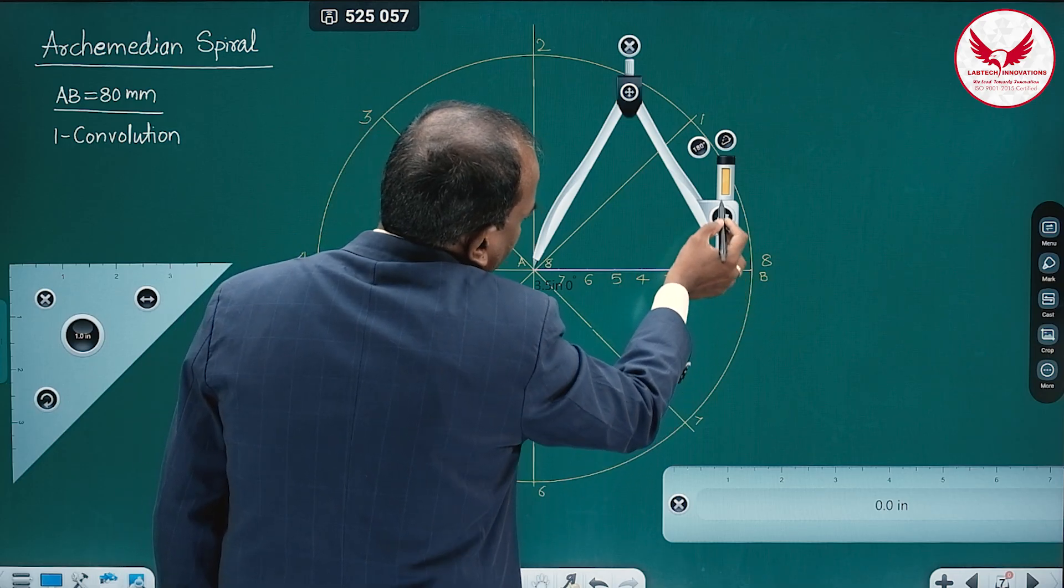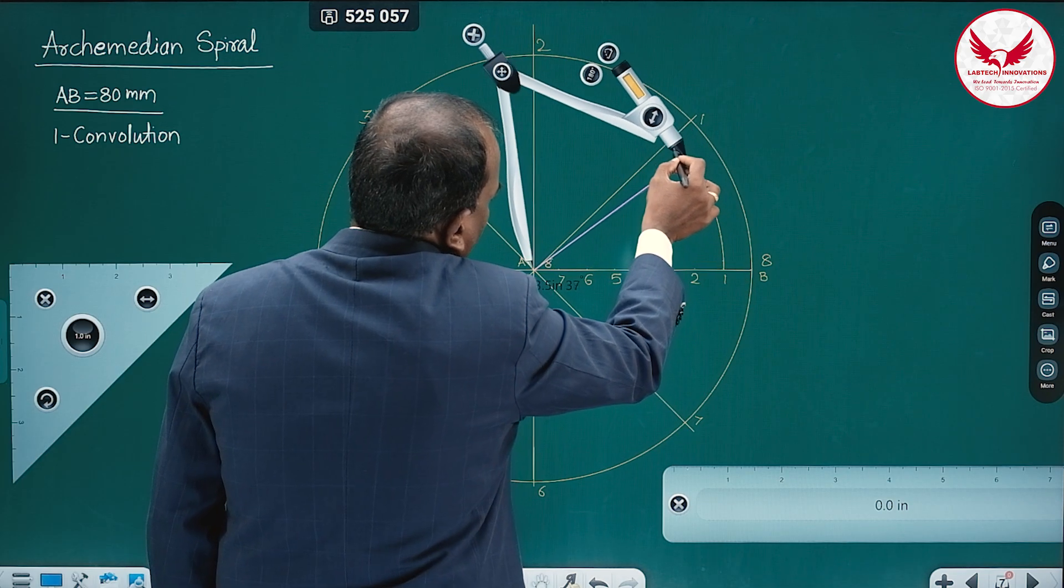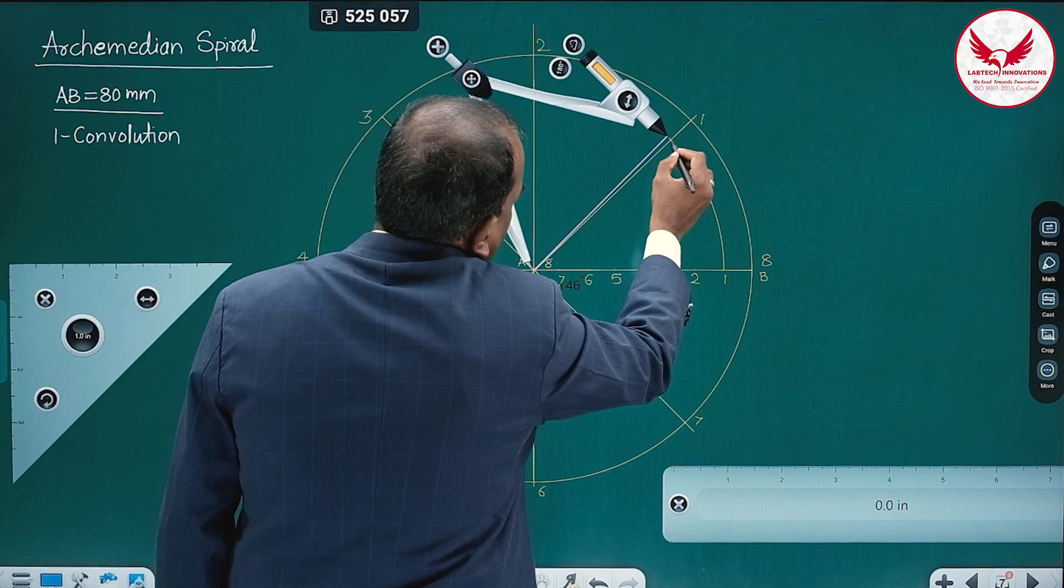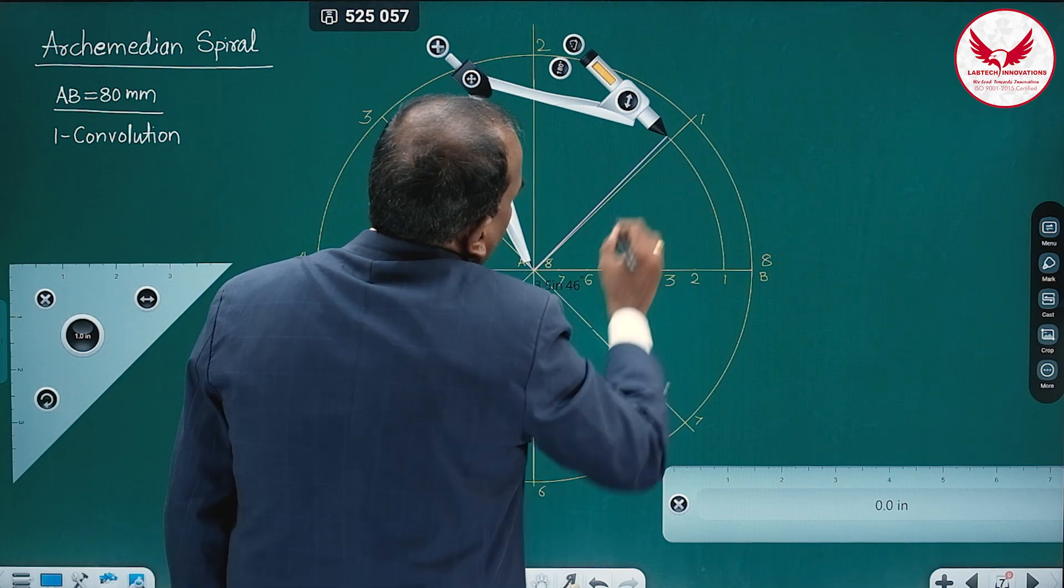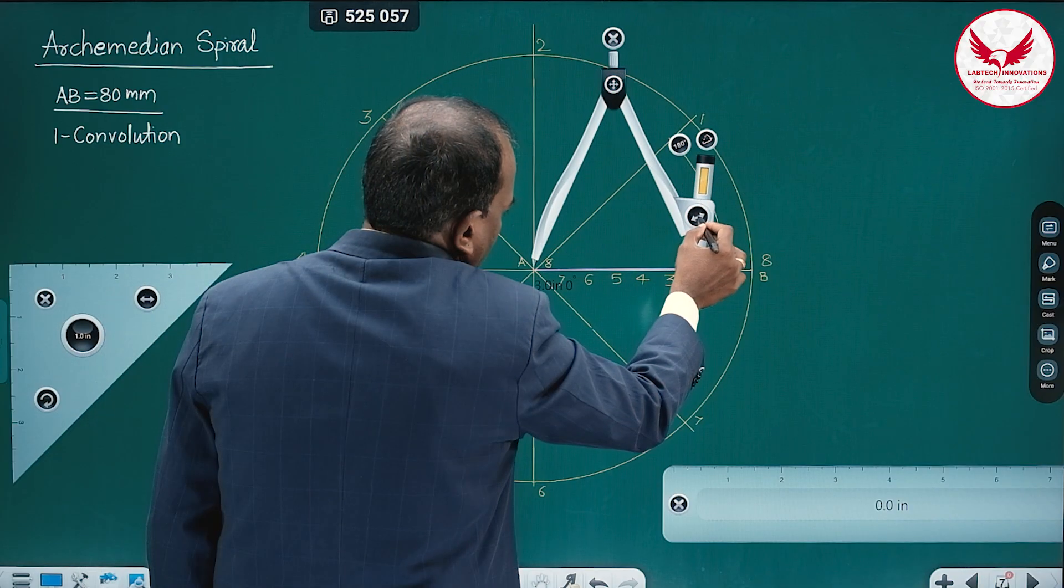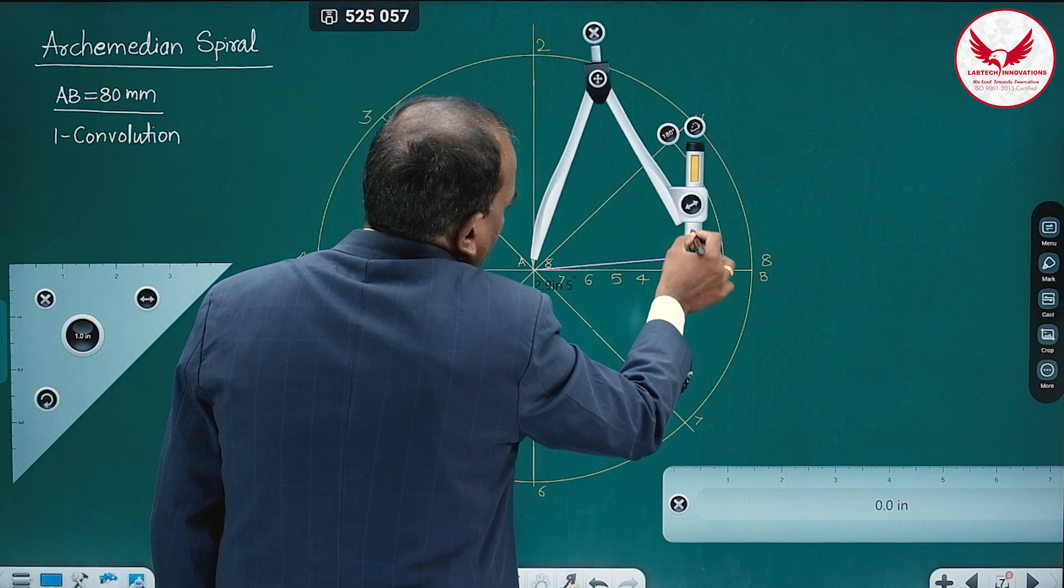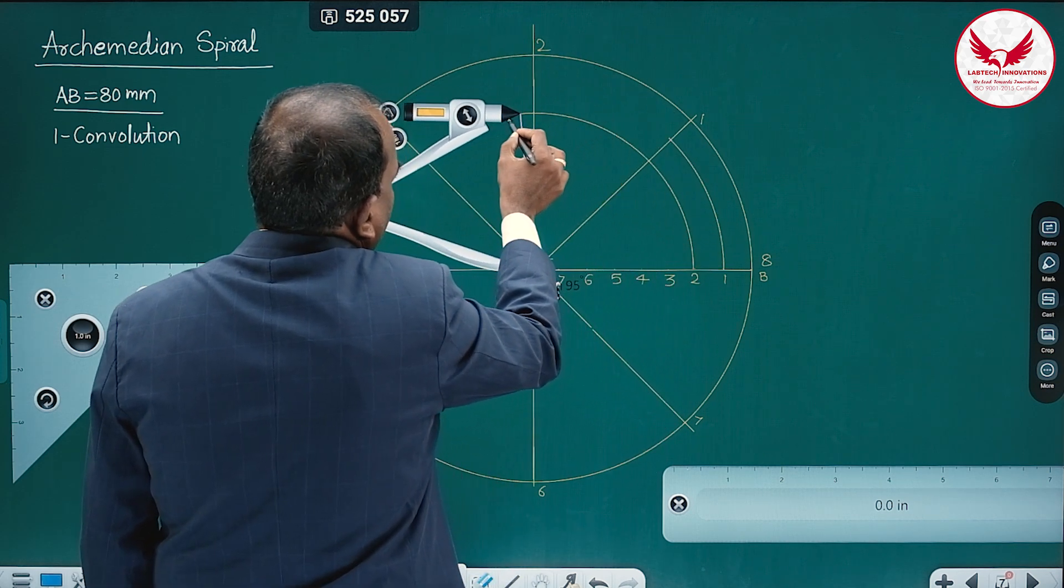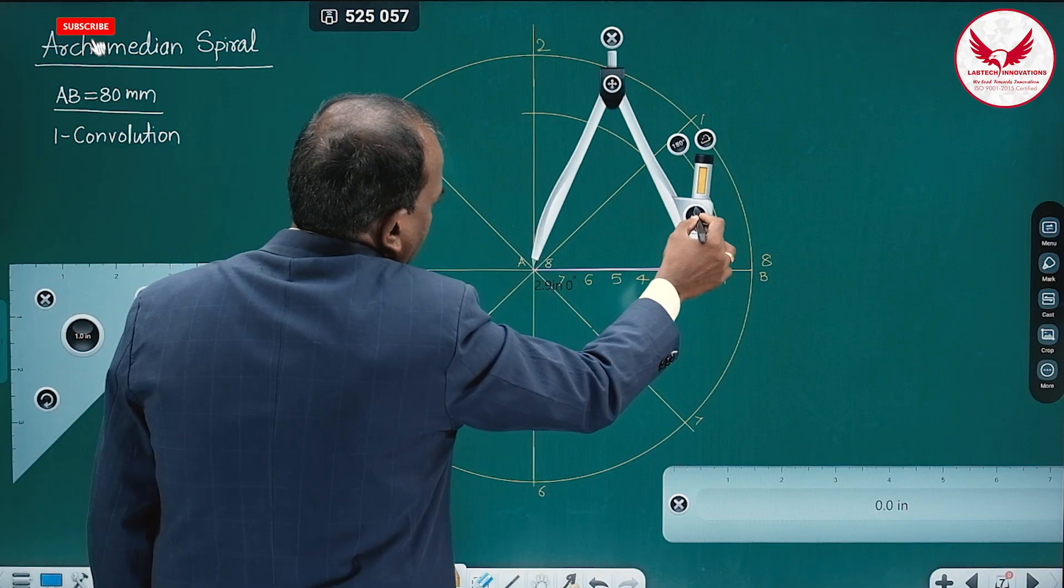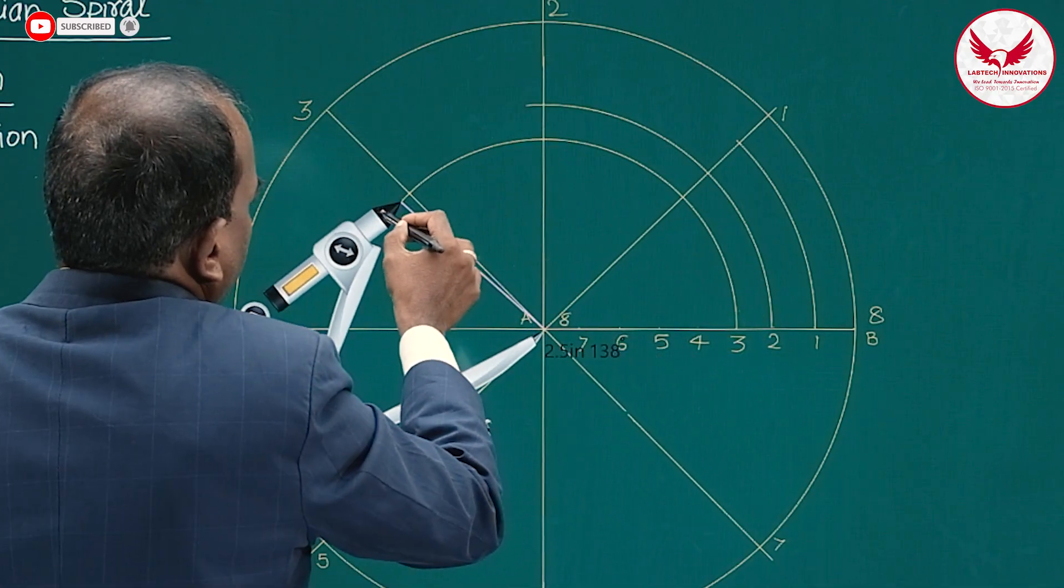If initially point is at B, then after 45 degree rotation it will be at this place. So this point is going to be P1. Then similarly, in the compass take distance equal to A to 2, and then rotate this and intersect at 2, a line passing through 2. Then next is P3.